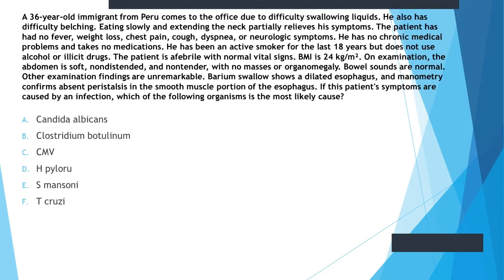On examination, the abdomen is soft, non-distended, and non-tender with no masses or organomegaly. Bowel sounds are normal and other examination findings are unremarkable. Barium swallow shows a dilated esophagus, and manometry confirms absent peristalsis in the smooth muscle portion of the esophagus. The second-to-last line told us the esophagus is dilated plus there is absent peristalsis on manometry.